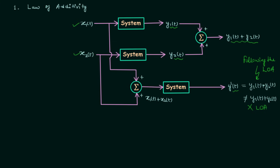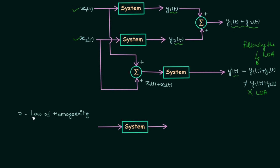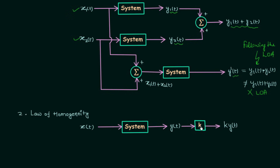Now we will discuss the law of homogeneity, which is a very simple and similar law to additivity. The system remains the same as before. Let's say the input is x(t) and the output generated is y(t). This time we will not perform any addition but multiplication: we multiply a constant k to the output y(t) to get k·y(t). That is step one. In step two, we multiply the same constant k to the input x(t), feed k·x(t) to the system, and the output generated — call it y̅(t) — is compared with k·y(t).